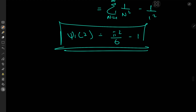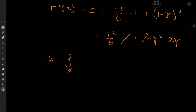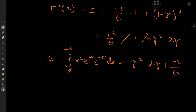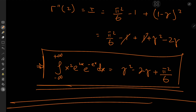Now it's time to piece everything together. Gamma double prime at two, which is our target integral, equals pi squared over six minus one plus the square of gamma prime at two, which is one minus gamma squared. Expanding: pi squared over six minus one plus one plus gamma squared minus two gamma. The minus one and plus one cancel, giving us our final answer: the integral from negative to positive infinity of x squared times e to the 2x times e to the minus e to the x dx equals gamma squared minus two gamma plus pi squared over six. The Euler-Mascheroni constant doesn't vanish today. Hope you enjoyed the video — be sure to like and subscribe.